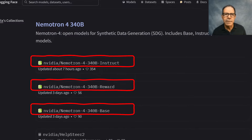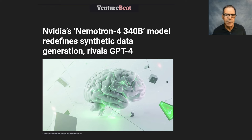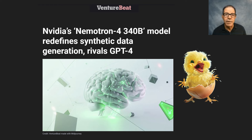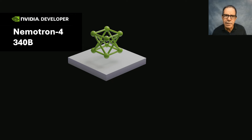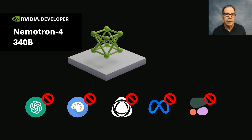But the big deal is that NemoTron 4 is designed to generate synthetic data for training new large language models — like the ones you or I might want to build, for example. Until now, most big models and APIs had clauses in user agreements that explicitly forbid using the data they generate for creating a new model of your own, because that new model might then compete with the source model. But that just changed.